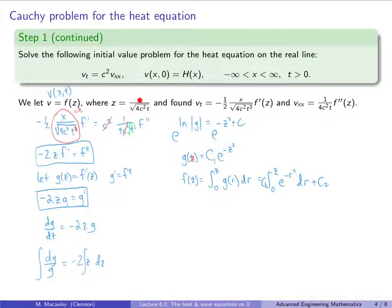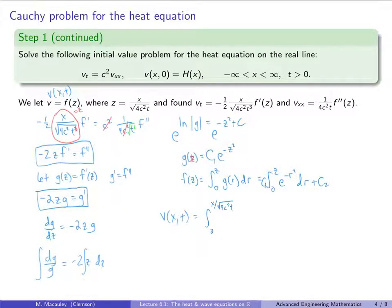Substituting Z = x/√(4c²T) back in, the general solution is: V(x,t) = C₁·∫₀^(x/√(4c²t)) e^(-r²) dr + C₂.